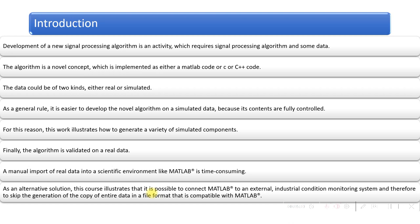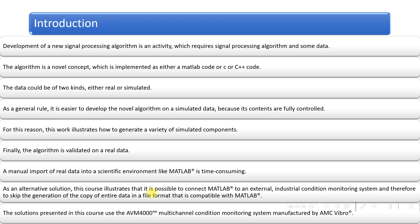A condition monitoring system is a device directly connected to the machine — we saw the architecture of this system in the last class. The solution presented in this course uses the AVM4000, an example of a commercial condition monitoring device. This is a multi-channel condition monitoring system manufactured by AMC Vibro, which you can find by searching for AMC Vibro online.